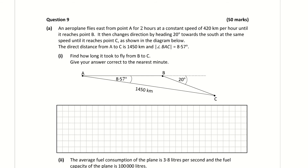Question 9A part 1 is asking us to find how long it took to fly from B to C, giving the answer to the nearest minute. This is a time question, so we need our distance, speed and time triangle. Let's fill in information onto the diagram. It travels from A for 2 hours at a constant speed of 420 km until it hits B, so the total distance from A to B is 420 multiplied by 2, giving 840 km.